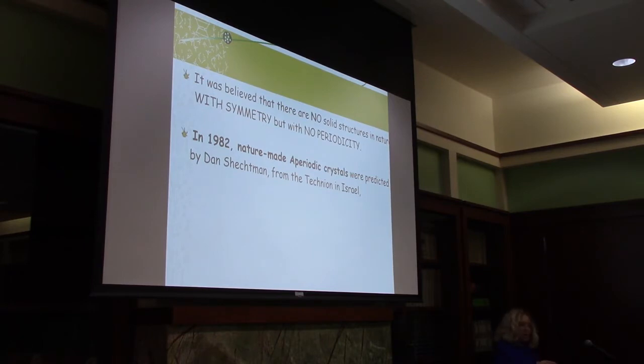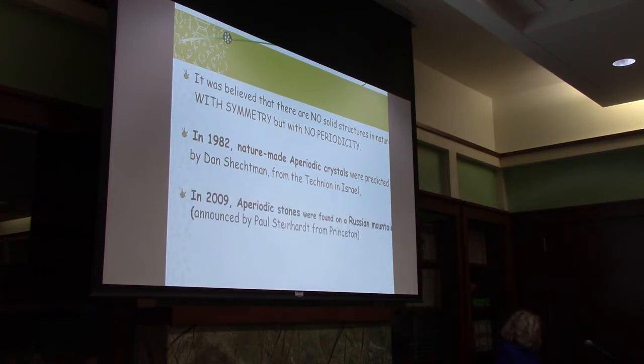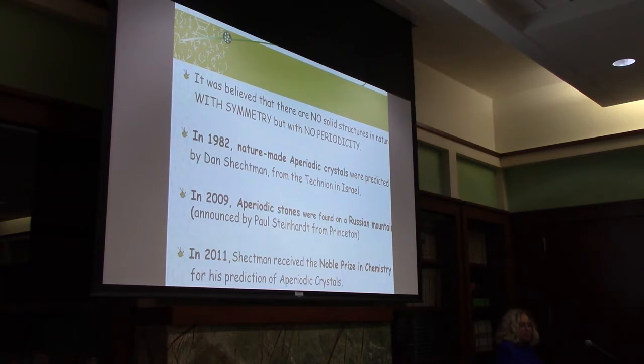But in 1982, Dan Sheffman from the Technion in Israel predicted that there exists nature-made aperiodic crystals. He was assistant professor in an American university. Everybody was laughing at him for predicting that, and he lost tenure. He came back to Israel and started from the beginning. But in 2009, aperiodic stones were found on a Russian mountain. Immediately, two years later, he got a Nobel Prize. You cannot get a Nobel Prize without an experiment to show your theory. Sheffman did produce a quasicrystal around 1984 from an alloy of manganese, but that was made in the lab, not nature-made.